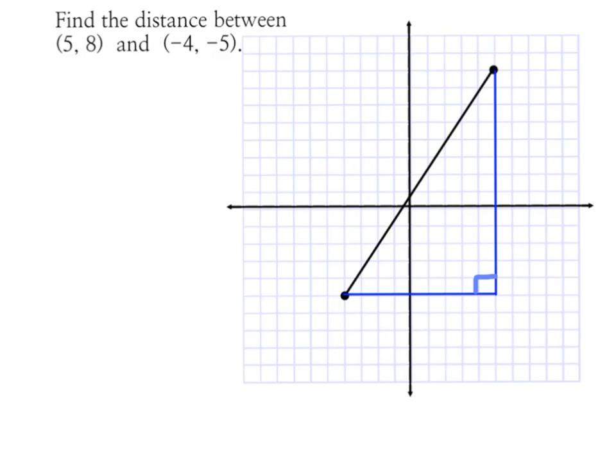So we're literally going to count how many squares we are going across from here to here, and that turns out to be 9 units long. Then we're going to count how many we are going from here to get up to here. Go ahead and count that out. It should be 13 units.